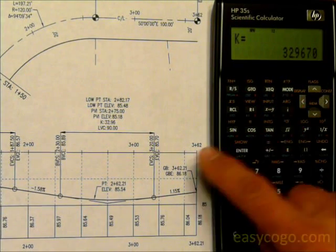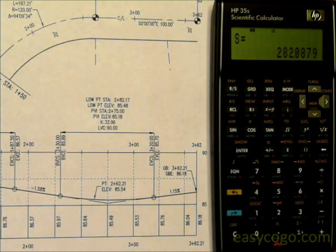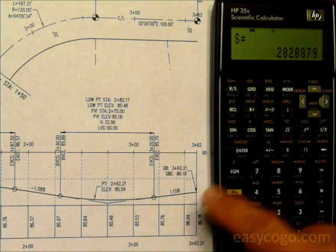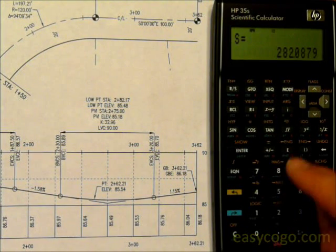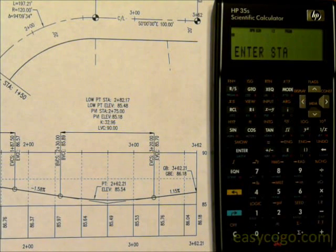Shows us the K value, so the change that matches, and then the low point station. Since it is a sag curve, it lets us know, and the station of the low point is displayed. Press RS.